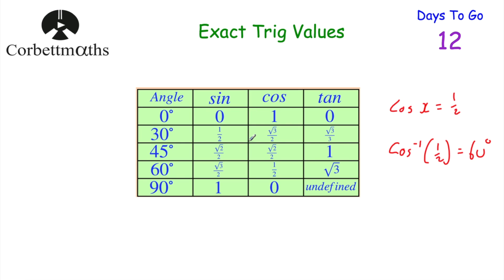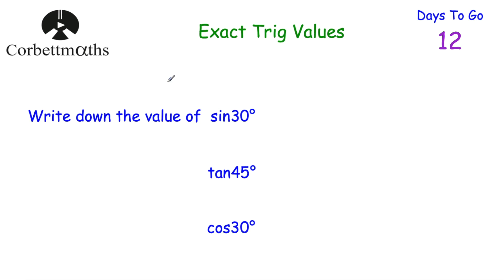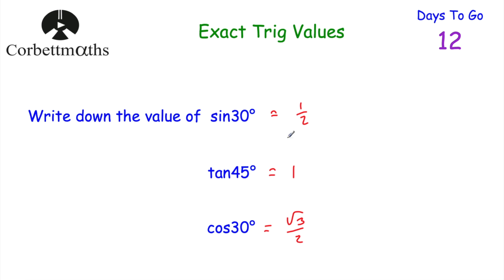Okay, let's have a look at some questions for you to try. Can you write down the value of: sin(30°), tan(45°), and cos(30°)? Remember these are non-calculator questions so do this without your calculator. So: sin(30°) = 1/2, tan(45°) = 1, and cos(30°) = √3 / 2. If you got those, well done.